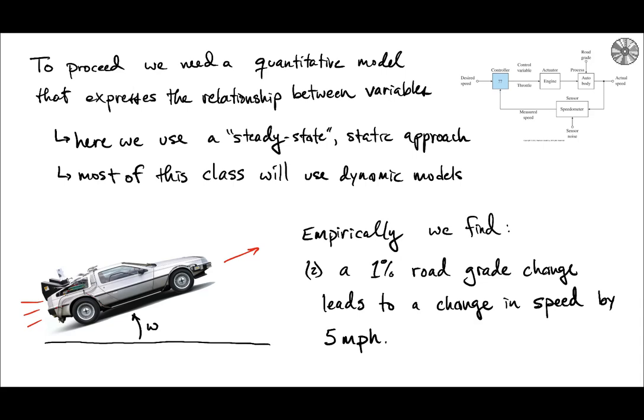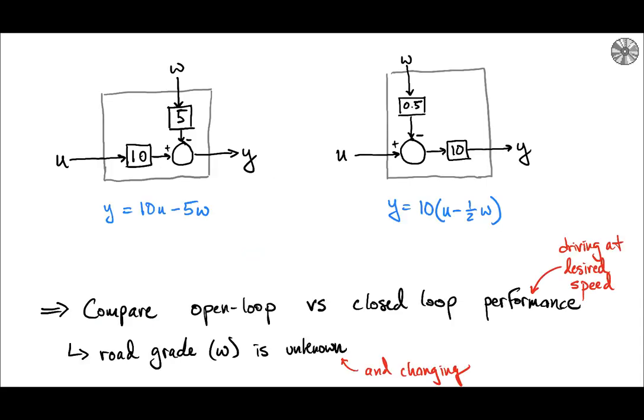So in order to use that we build this into a quantitative model and so here I'm just trying to show that there's a couple different ways that you could express this. On the left we have a diagram that shows pretty much what those two statements say. Essentially the input u, the throttle, is multiplied by 10 so the degree of the throttle is multiplied by 10 in order to determine what the resulting speed y is. At the same time the disturbance w is multiplied by 5 miles per hour and added on with a negative sign there.